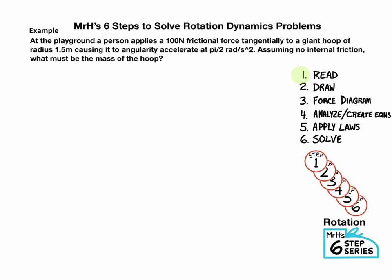Alright, let's do our first problem. At the playground, a person applies a 100 Newton frictional force tangent to a giant hoop of 1.5 meter radius, causing it to angularly accelerate at π/2 radians per second squared. Assuming no internal friction, what must be the mass of the hoop? Step 1 is to read and understand that problem. They're asking for mass, so we're going to write a symbol for mass and a question mark. They also gave us some other relevant information, so we're going to write that down too.